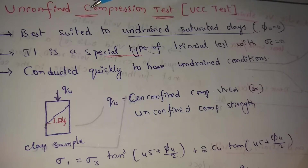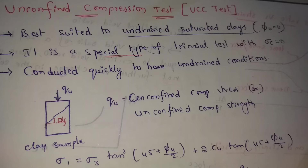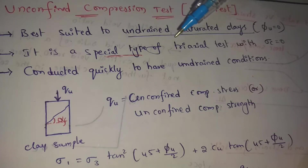It is a special type of triaxial test where the confining pressure σc is equal to 0. Sigma c means confining pressure, and it equals 0. Under these conditions, we conduct the Unconfined Compression Test quickly to maintain undrained conditions.